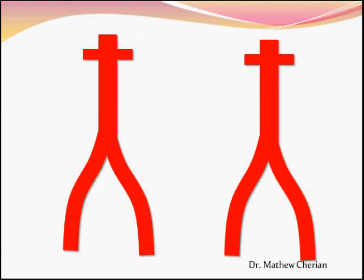Let's look at the strategy used to treat category 1 and category 2 lesions. If there is a focal stenosis just above the iliac bifurcation, you would need to use a technique called the kissing balloon technique. If the stenosis is higher up, your strategy would be to use just one balloon and one stent.